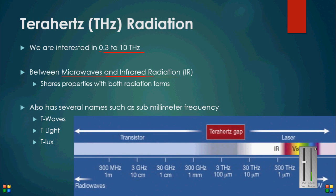In this image we can see a red box which identifies the range known as the terahertz gap. As you can see, the terahertz gap exists with wavelengths less than visible infrared light but greater than radio waves.